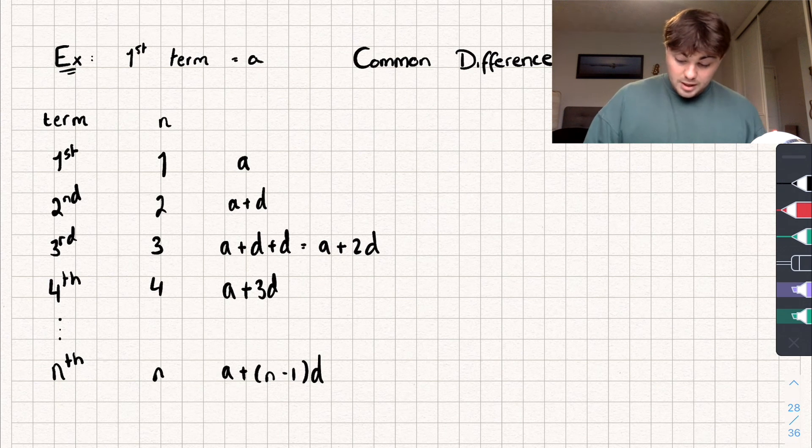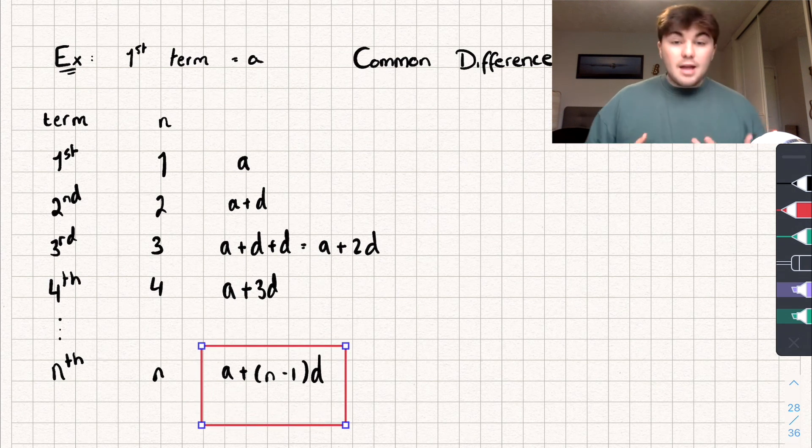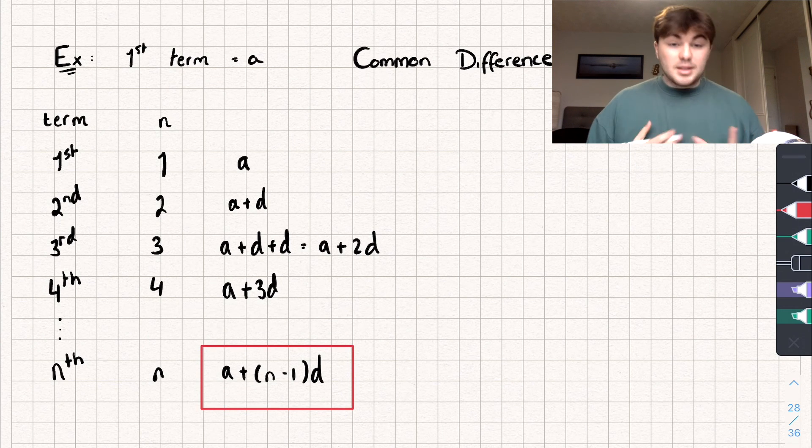And so what we can say is, well for the nth term, it's going to be a, which is the first term in the sequence, plus n minus 1 multiplied by d, which is our common difference. So this formula is something that you will need to know. Okay, and this is the formula for the nth term of an arithmetic progression.